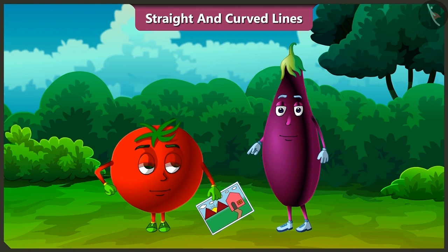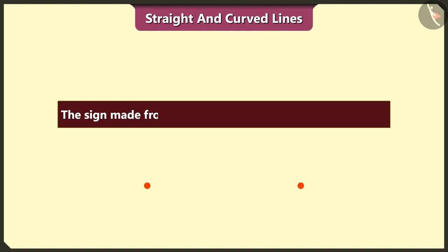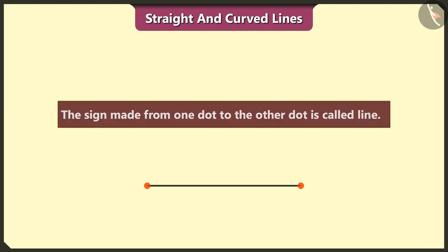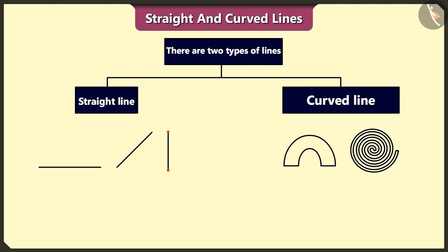But Tingu, what is this line? The sign made from one dot to other dot is called line. There are two types of lines: straight line and curved line.